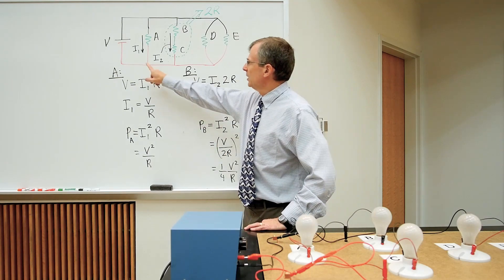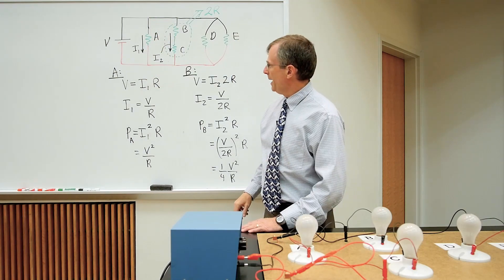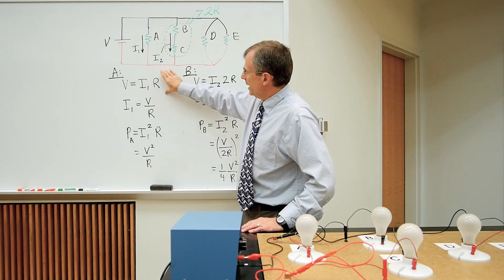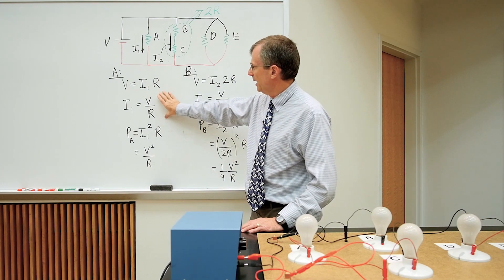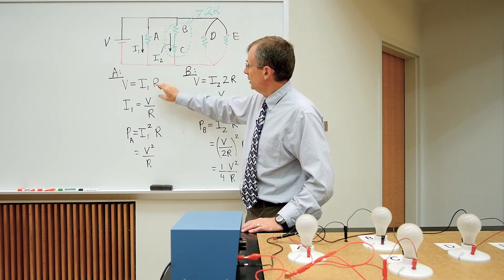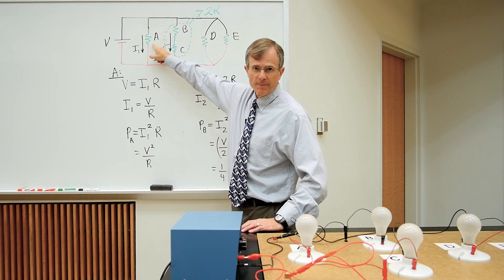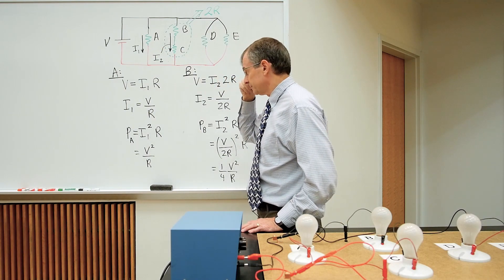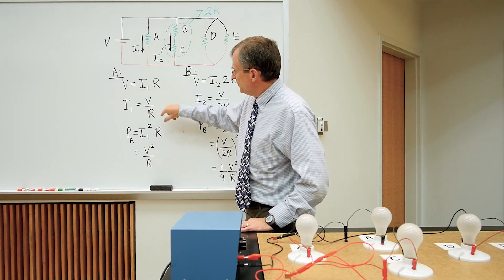If we're interested in a current through this bulb here, bulb A, we can write down Ohm's Law, V equals I1 times R, solve for I1, the current in this branch. R is the resistance of this resistor. So I1 then is V over R.